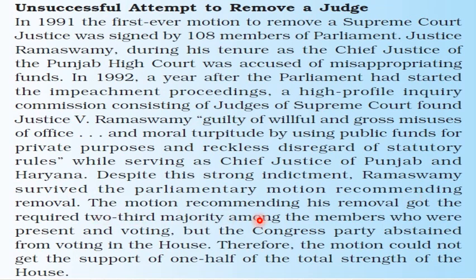The motion recommending his removal got the required two-thirds majority among members who were present and voting. However, the Congress party abstained from voting in the House. Therefore, the motion could not get the support of one-half of the total strength of the House, and this resulted in the unsuccessful attempt to remove the judge.